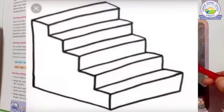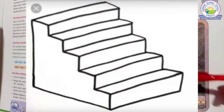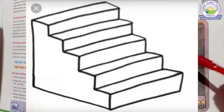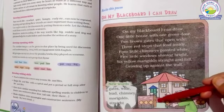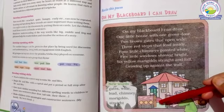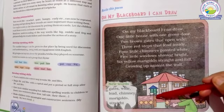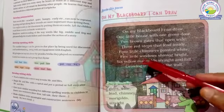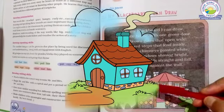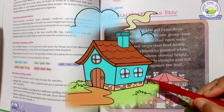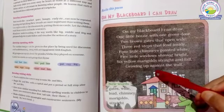Three red steps that lead inside. On my blackboard I can draw three steps. Four little chimneys painted white. Here I am going to draw the chimneys.